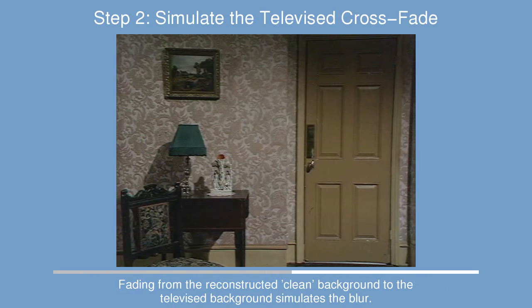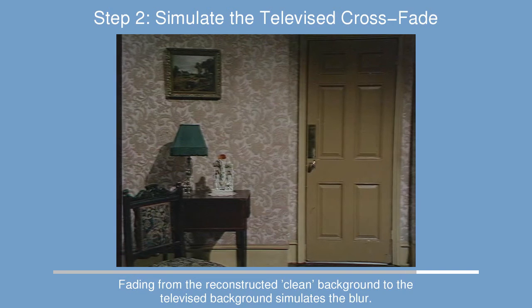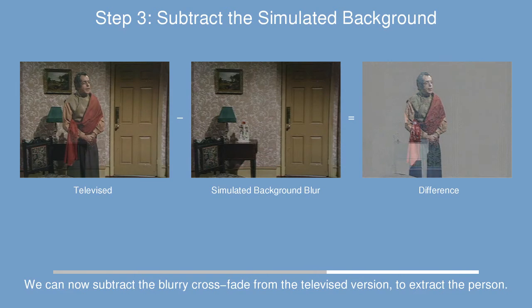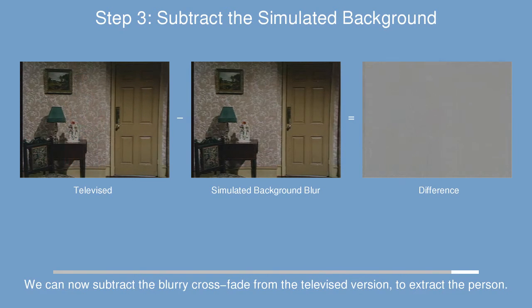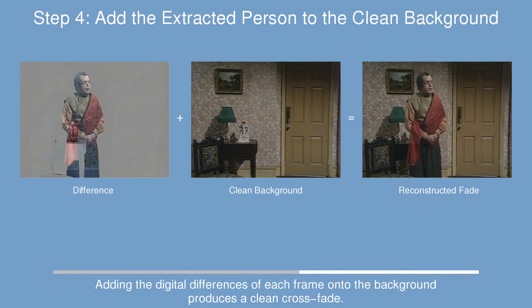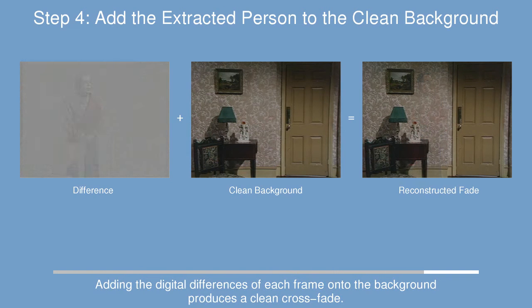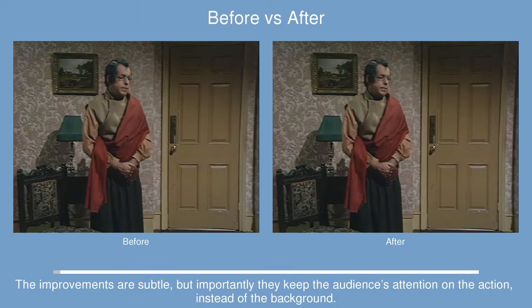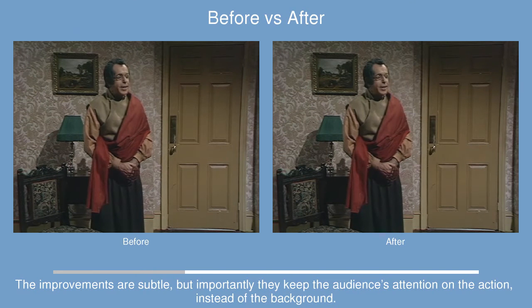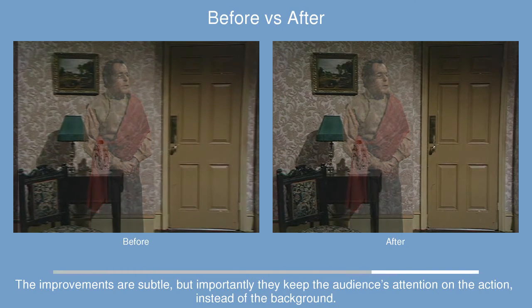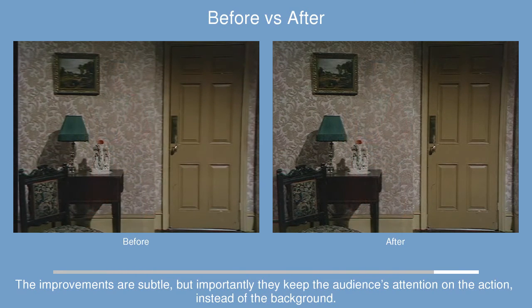Simulating the crossfade from clean background to the televised shot allows us to digitally extract Cho Ji from the rest of the scene. We can then add him back onto the clean background to produce an improved crossfade. The resulting scene keeps the focus on Cho Ji rather than distracting the audience with subtle changes over the entire scene.